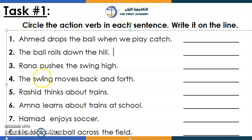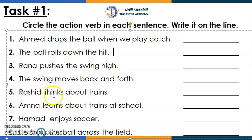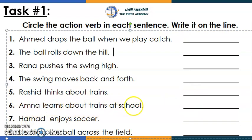The action verb comes after the noun, so the action verb here is 'moves' — excellent! Circle it and write it. Let's move to number five: 'Rusha thinks about trains.' Rusha is the noun and 'thinks' is the action verb — well done! Number six: 'Amna learns about trains at school.' Amna is the noun and 'learns' is the action verb.